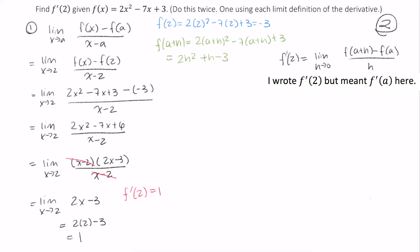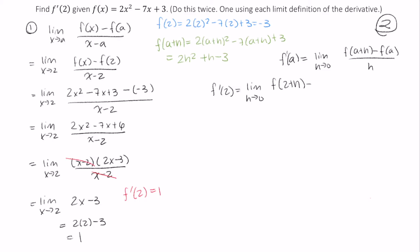Now I can continue — excuse me, that should be an a here. So f prime of 2 in this case is the limit as h approaches 0 of f of 2 plus h minus f of 2 divided by h.